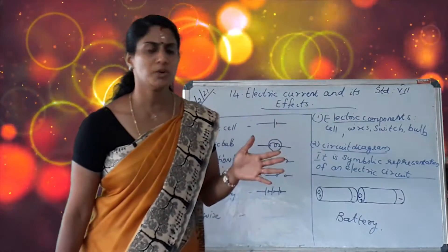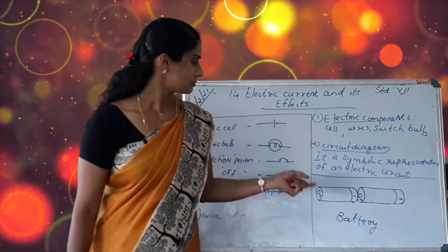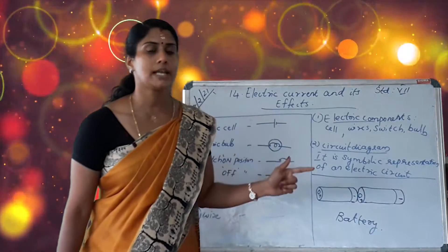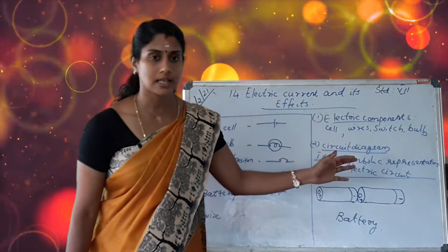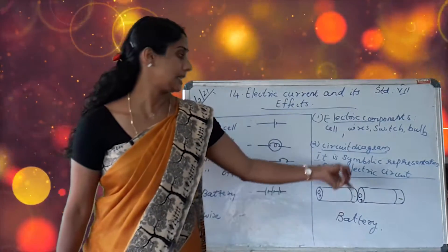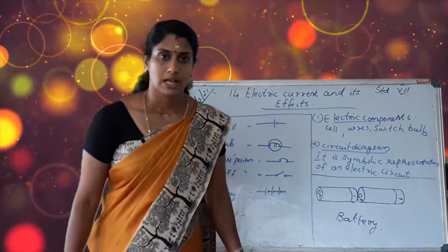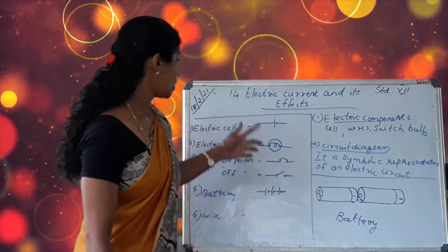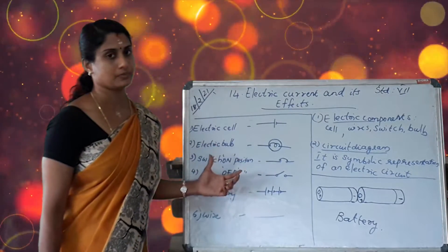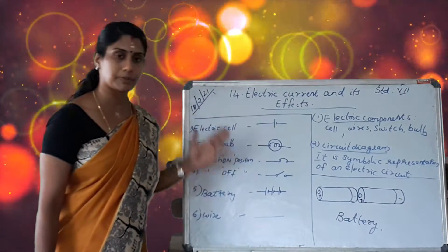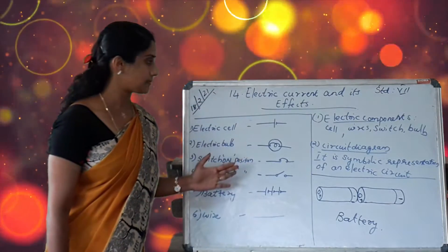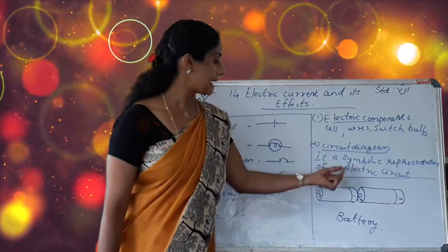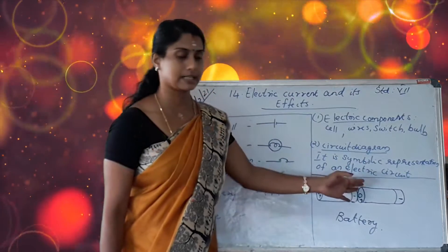What do you mean by an electric diagram? It is a symbolic representation of an electric circuit. We represent the circuit using symbols, and this is called a circuit diagram. Study these symbols very carefully.